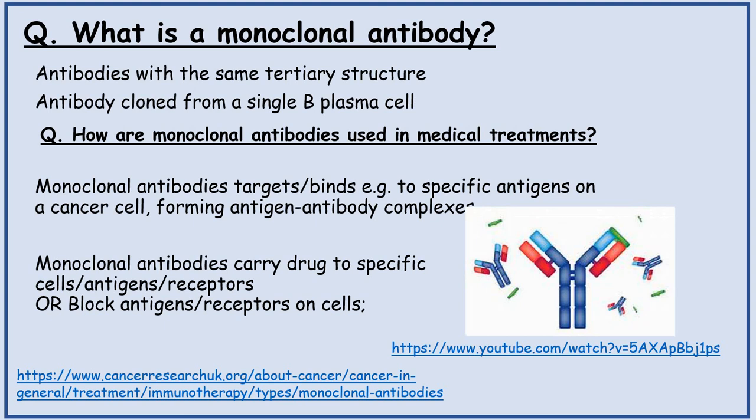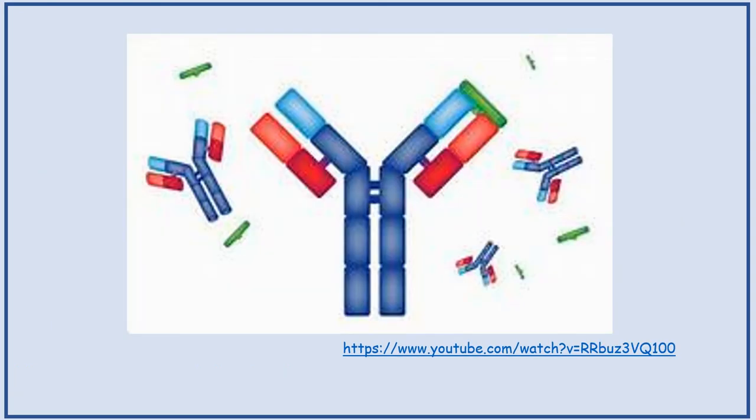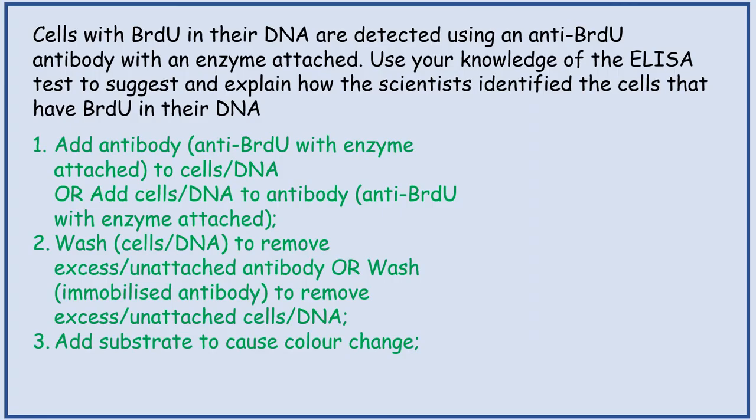How are monoclonal antibodies used in medical treatments? Monoclonal antibodies target or bind to specific antigens on a cancer cell, forming antigen-antibody complexes. Monoclonal antibodies carry drugs to specific cells, antigens, or receptors, or they block antigens or receptors on the cells. Cells with BrdU in their DNA are detected using an anti-BrdU antibody with an enzyme attached — use your knowledge of the ELISA test to suggest and explain how the scientists identified the cells that have BrdU in their DNA.